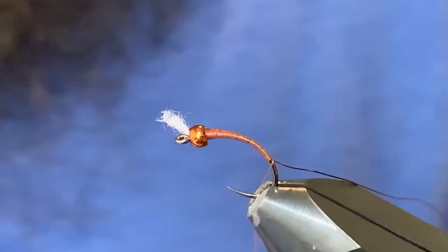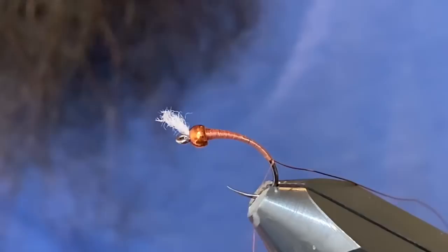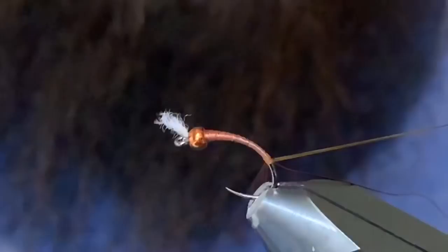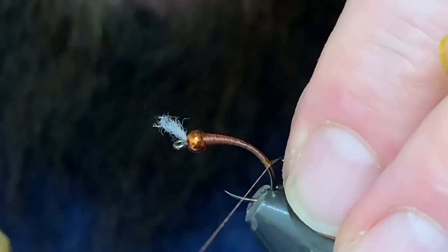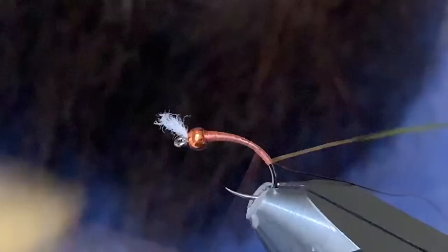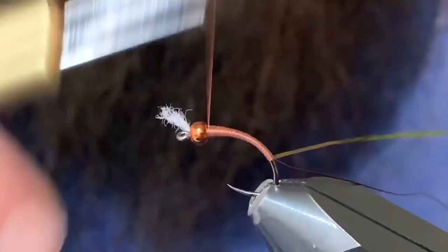Then we're going to take some—this is olive buzzer wrap—and I'm just going to grab the end of that buzzer wrap and get some nice even wraps coming back up the shank. Just try to smooth everything out, make sure that wire's covered up.